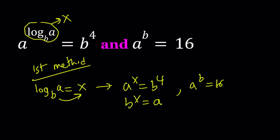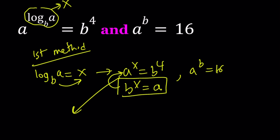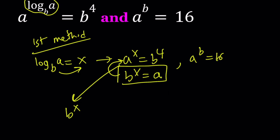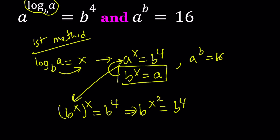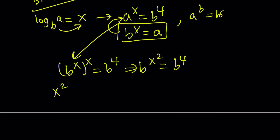That is basically the definition. So now we can go ahead and use this. Let's replace a with b to the power x. That gives us b to the power x to the power x equals b to the power 4. This implies b to the power x squared equals b to the power 4, and therefore x squared equals 4. This equation has two solutions: x equals 2 and x equals negative 2.